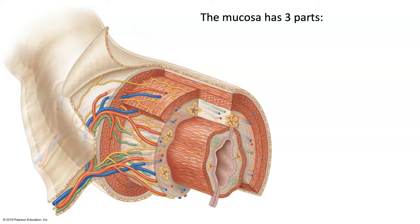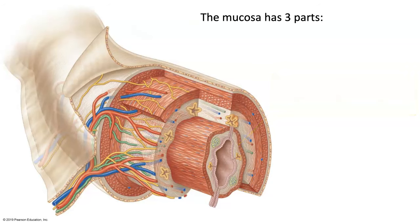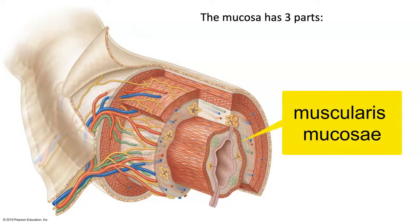Deep to the epithelial tissue is a region called the lamina propria — that's the bed of loose connective tissue on which the epithelium is lying. And then there's a thin ring of smooth muscle called the muscularis mucosa.